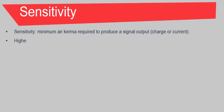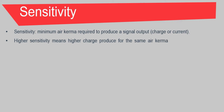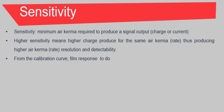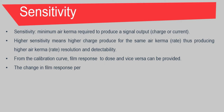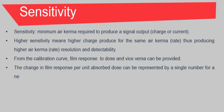Sensitivity is the minimum output — charge or current — required to produce a given output. High sensitivity means higher charge produced for the same absorbed dose, thus producing higher absorbed dose resolution and detectability. From the calibration curve, film response to dose and vice versa can be provided. The change in film response per unit absorbed dose can be represented by a single number for a net optical density up to 1.0, defined here as film average sensitivity.